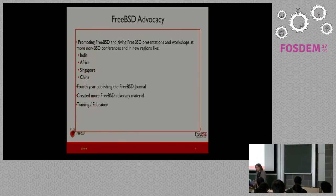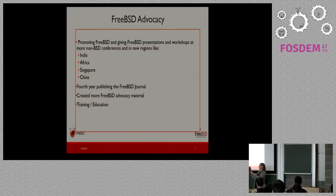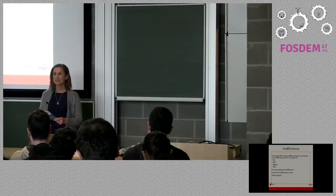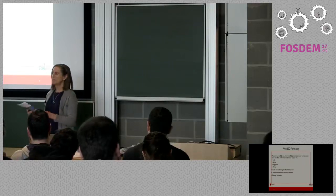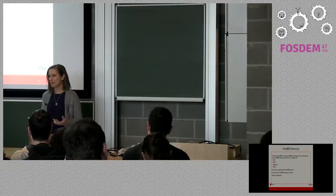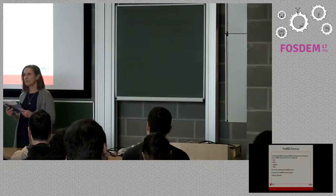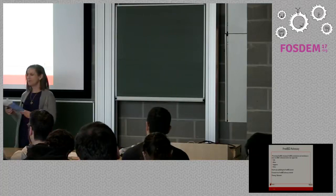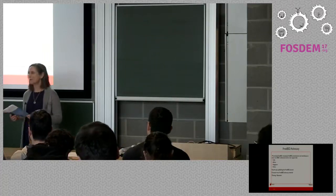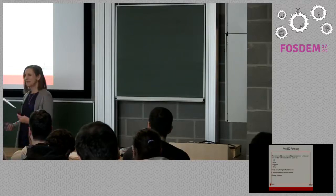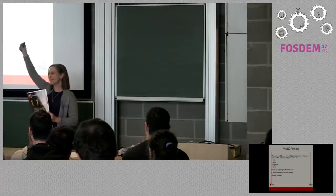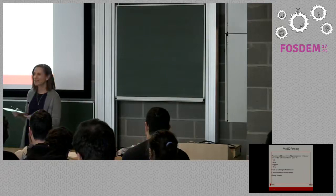We also publish the FreeBSD Journal. We always print hard copies when we come out with a major release — so when 11.0 came out, we printed this. It's a professionally produced magazine — a great way to get information about Unix-like operating systems and to contribute by writing articles yourself. We have a professional editor. So please make sure you take one if you don't have one — otherwise it's available as a digital copy. Does anyone here get the journal? I hope eventually everyone in the room will raise their hand.